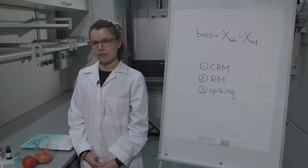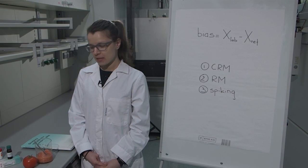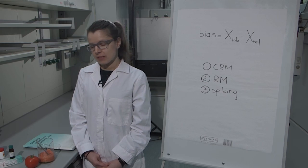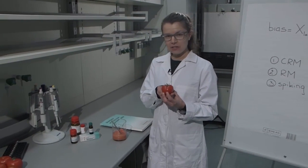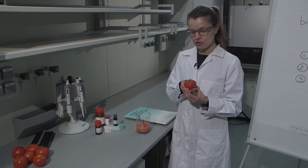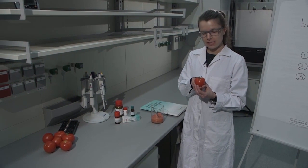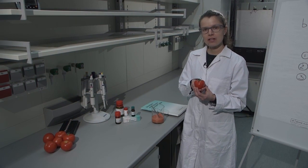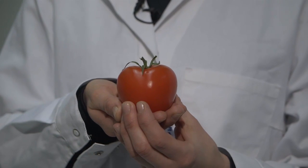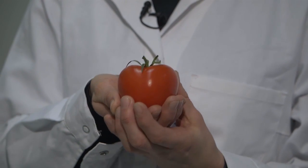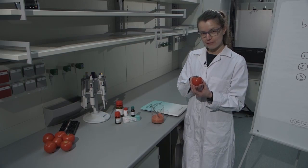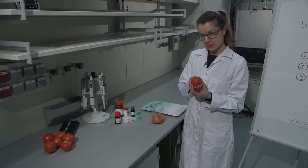So the first one is certified reference material. The idea is that you have a tomato that has an exact concentration of glyphosate for example and it has a certain uncertainty. However, as you can imagine, it's quite difficult to buy a certified reference tomato.